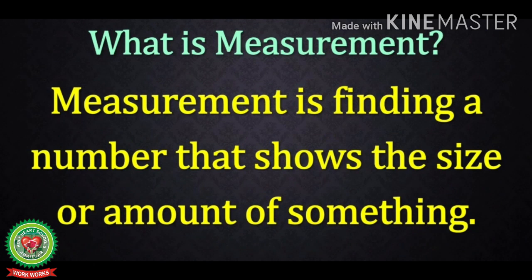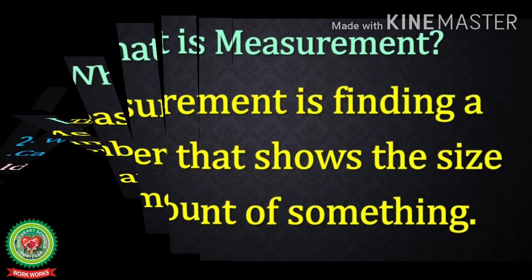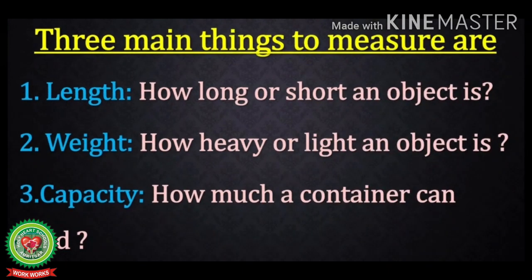Measurement is finding a number that shows the size or amount of something. Three main things we measure are: length, that means how long or short an object is; second is weight, that means how heavy or light an object is; and third is capacity, that means how much a container can hold — it is mostly used for liquids.